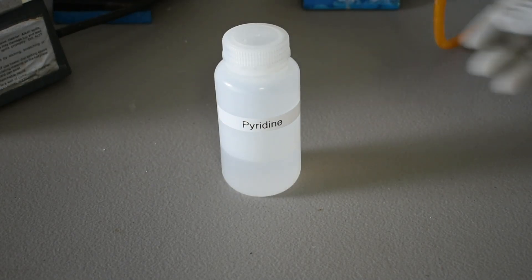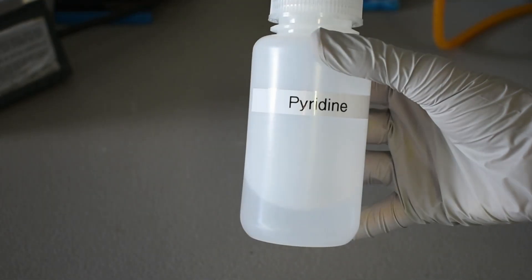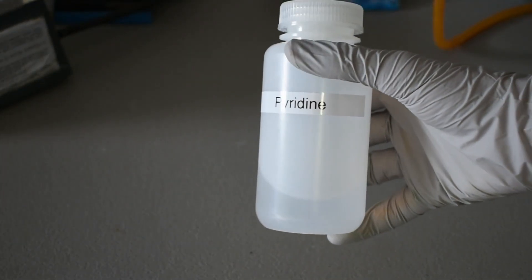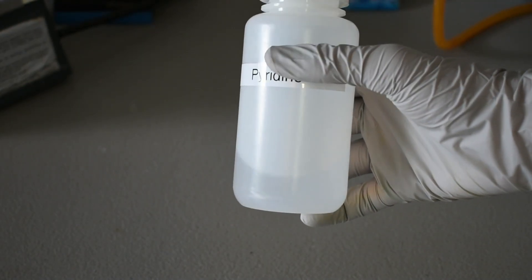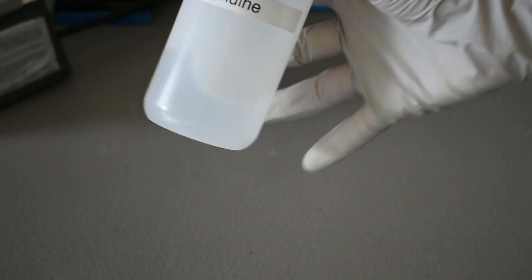Here's our final product. A total of 88.6 grams of pyridine, which corresponds to a percent yield of 55%. Now that's not the best yield, but I don't need very much pyridine. I'm not too worried about it.